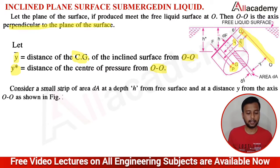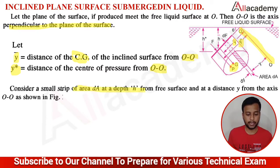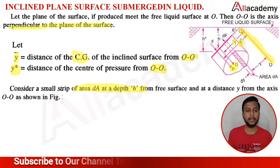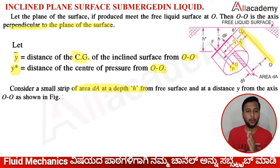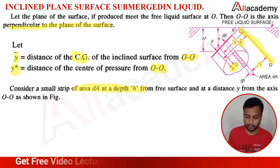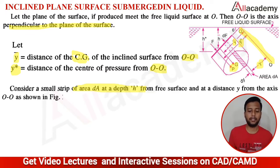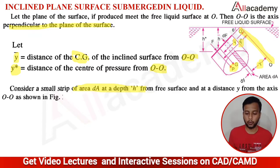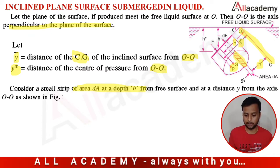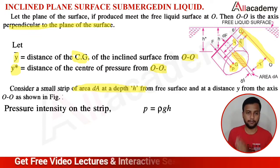Now let us consider an elemental strip of area dA at a depth H from the free surface of the liquid and at a distance Y from the O-O axis. As you can see in the figure, this elemental strip is at a distance H from the free surface and at a distance Y from the O-O axis.